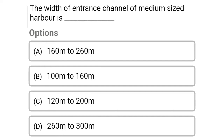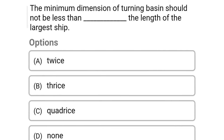Next question: the width of the entrance channel of a medium-sized harbor is — Option A: 160 meters to 260 meters, Option B: 100 meters to 160 meters, Option C: 120 meters to 200 meters, Option D: 260 meters to 300 meters. The correct answer is Option B, 100 meters to 160 meters.